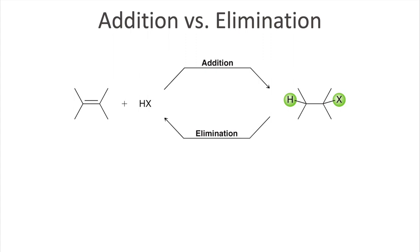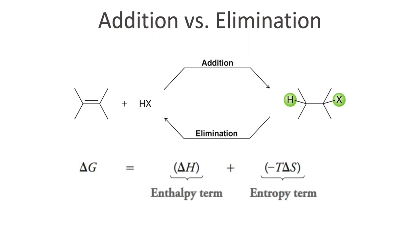In order to understand that, let's review some thermodynamics from general chemistry. Remember the ΔG term? ΔG determines whether a reaction is spontaneous — when ΔG is negative, your reaction will be spontaneous. ΔG depends on two terms: the enthalpy term, often called heat, and the entropy term, related to order or disorder in a reaction.